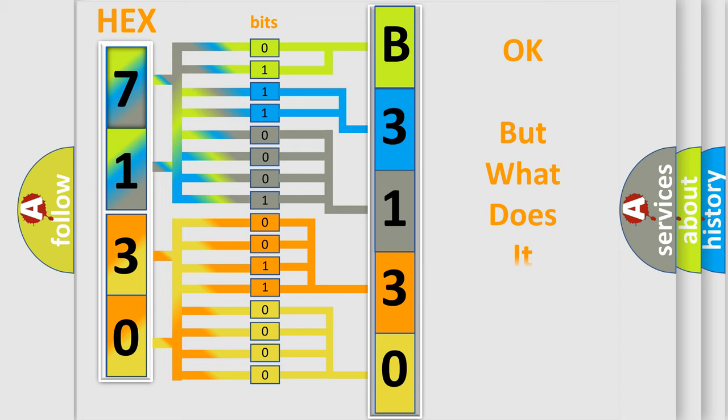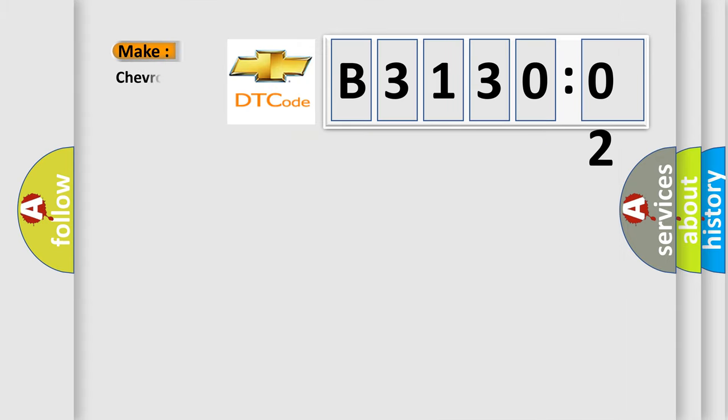We now know in what way the diagnostic tool translates the received information into a more comprehensible format. The number itself does not make sense to us if we cannot assign information about what it actually expresses. So, what does the diagnostic trouble code B313002 interpret specifically?